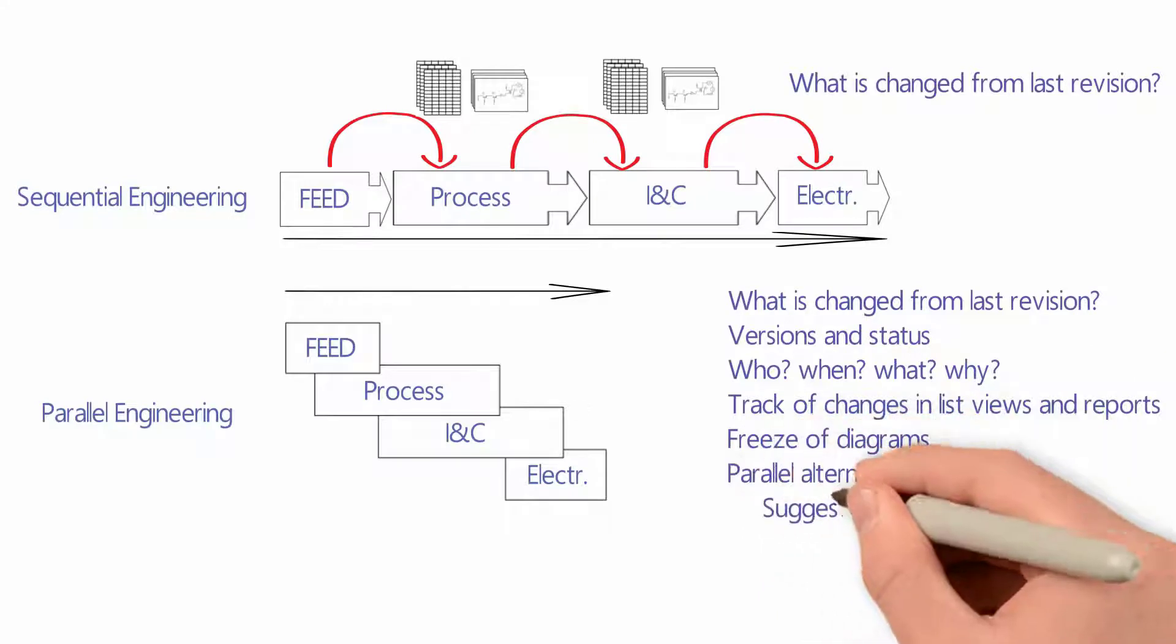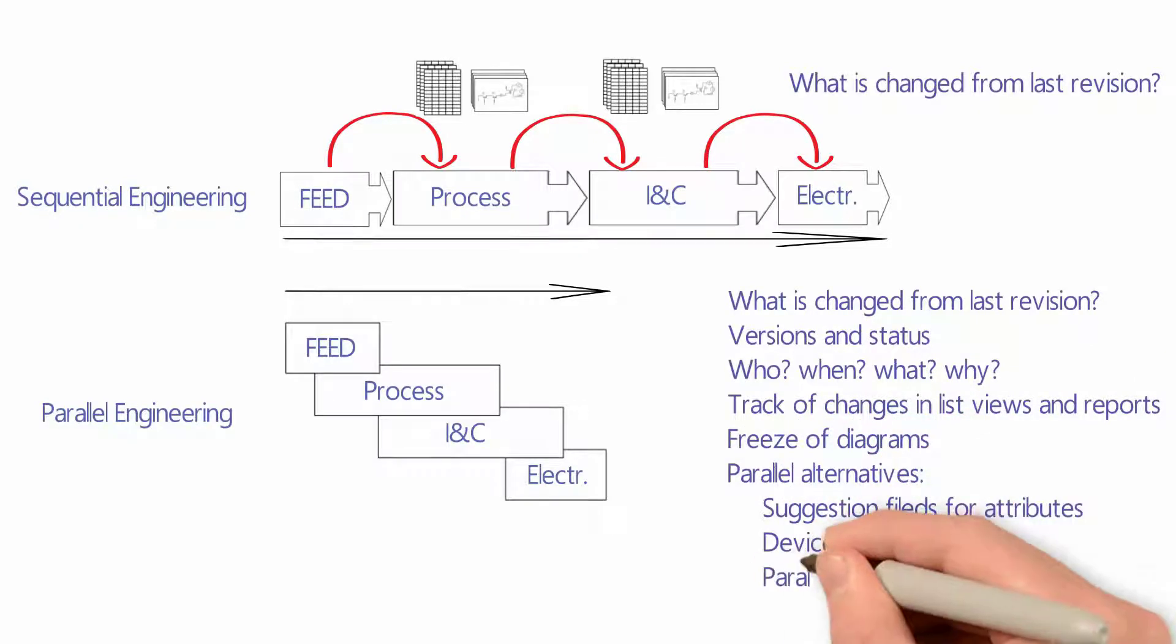In parallel engineering, it's possible to see the changes from the last revision, but also possible to manage versions and status of objects, see details of history, track changes in configurable lists, freeze diagrams to prevent unintended changes, work on parallel alternatives without changing the real data, and create parallel scenarios. Each of these points will be explained in this video.